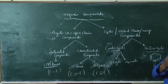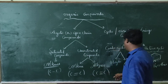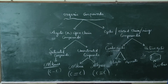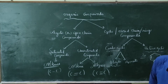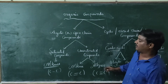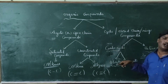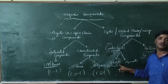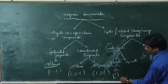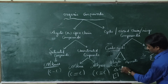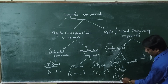Alicyclic compounds are cyclic but not aromatic in nature. Examples of alicyclic compounds include cyclopropane and cyclobutane.